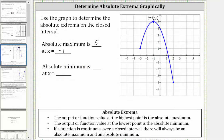The lowest point on the graph is this endpoint here. The ordered pair for this endpoint is two comma negative four. Therefore, the y value or function value of negative four is the absolute minimum, and it occurs at x equals two.